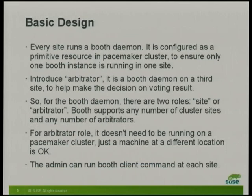The basic design is that every site — everywhere you've got one of your clusters running — runs an instance of the Booth daemon. Within each individual Pacemaker cluster at a site, the Booth daemon runs with a virtual IP address in a resource group, so you can only have one instance of Booth running at any site. If an individual node at a site goes down that's running Booth, Booth just fails over to another node so that the other sites can still see it. Obviously you need your firewall configured so the IP address is accessible to the other sites.